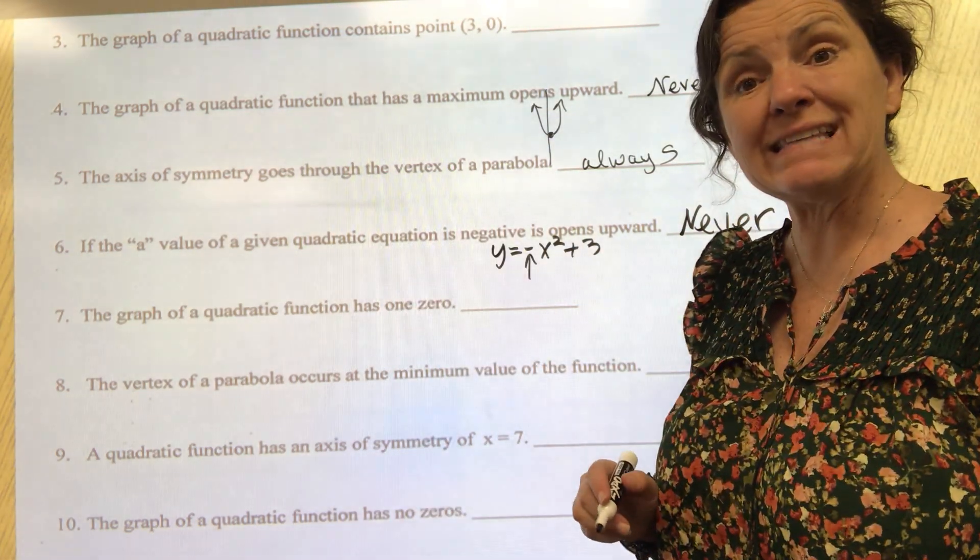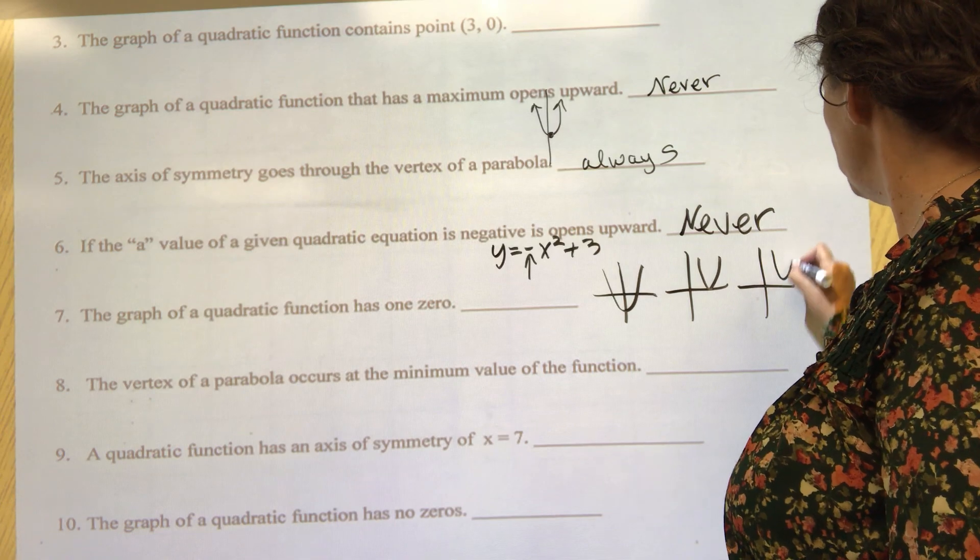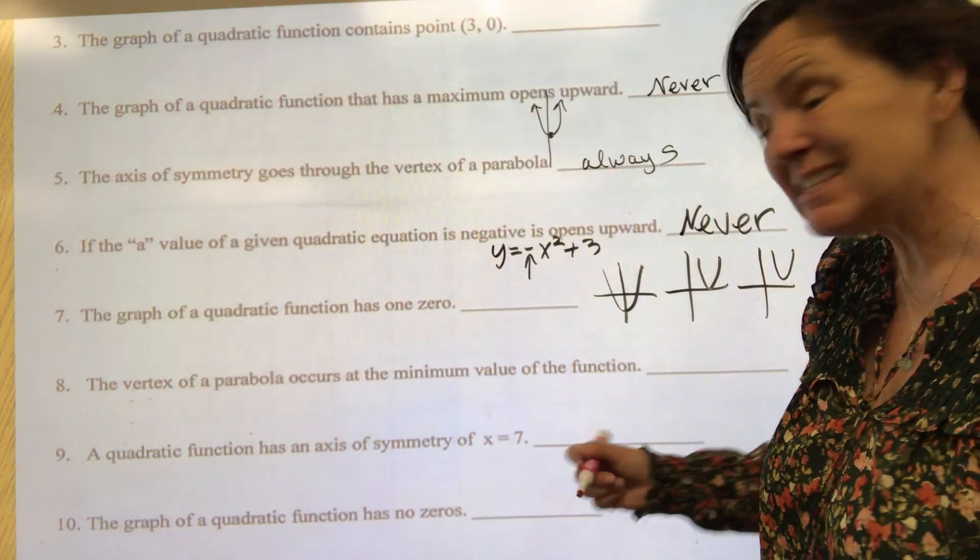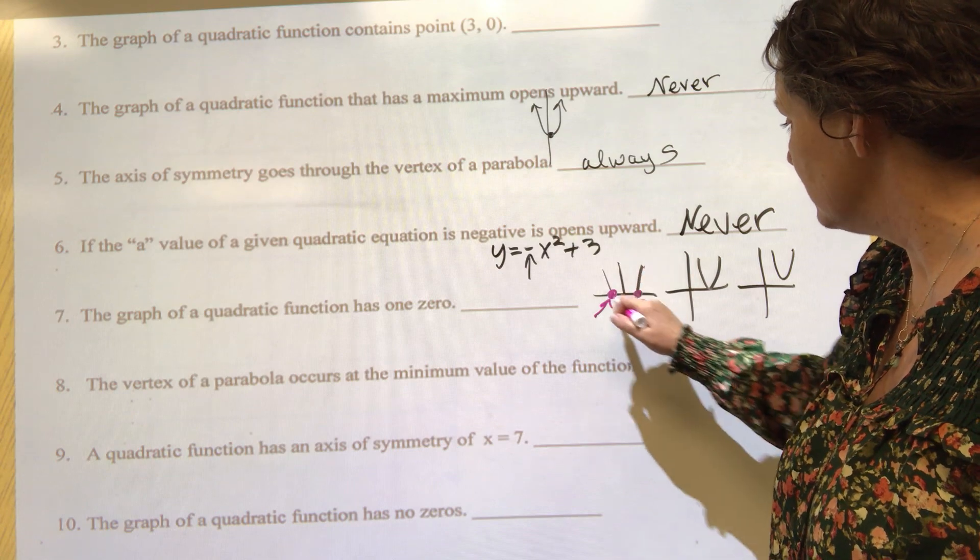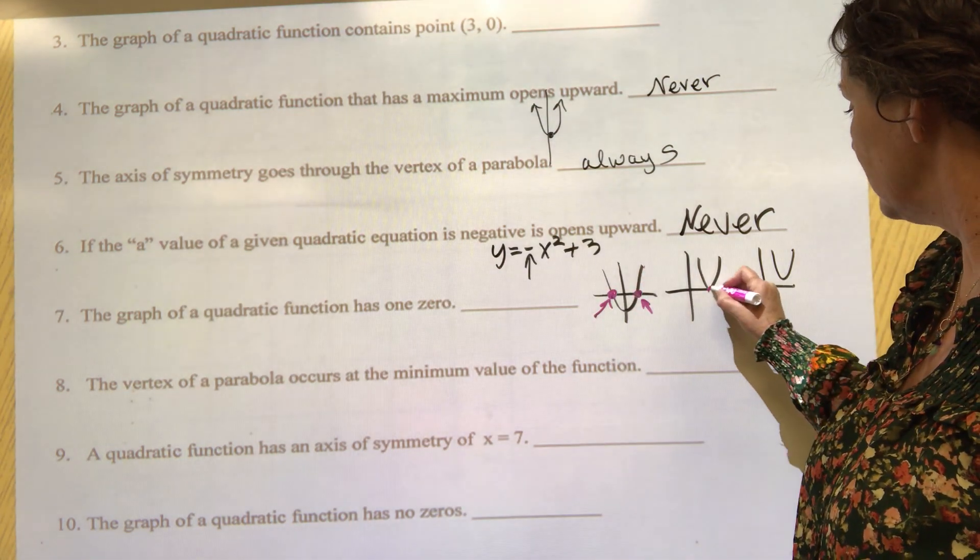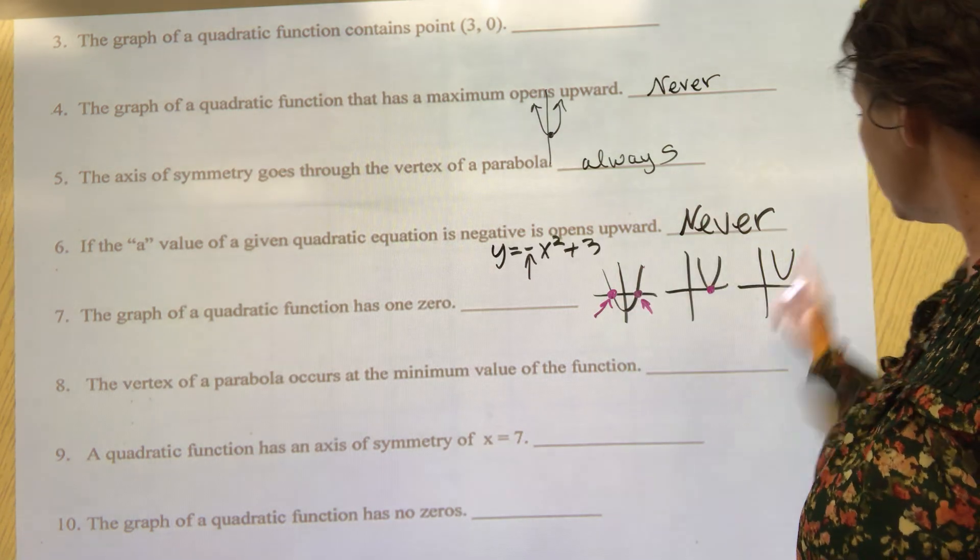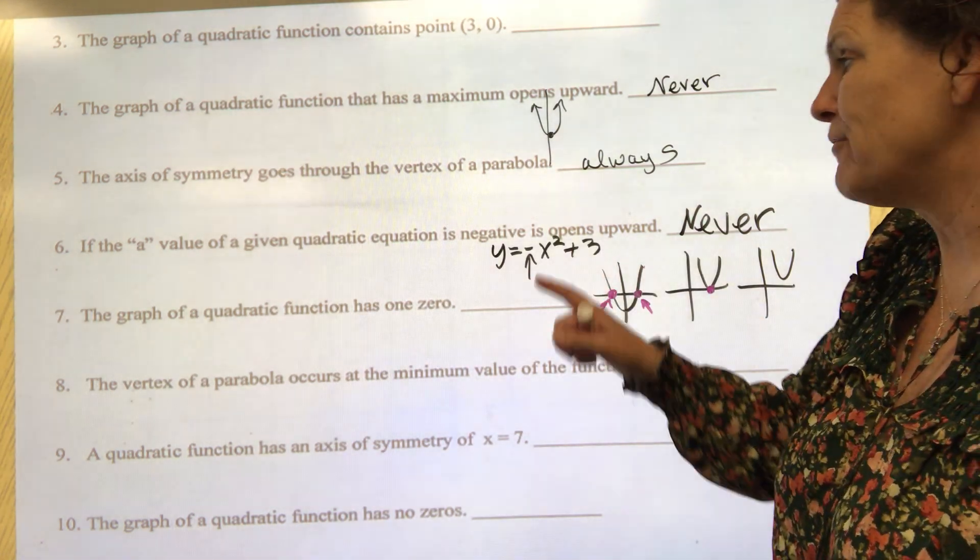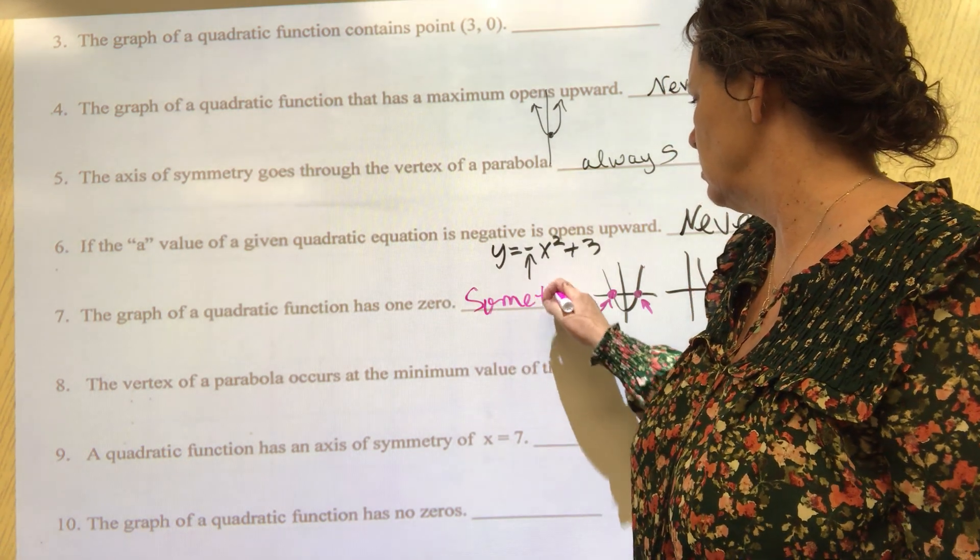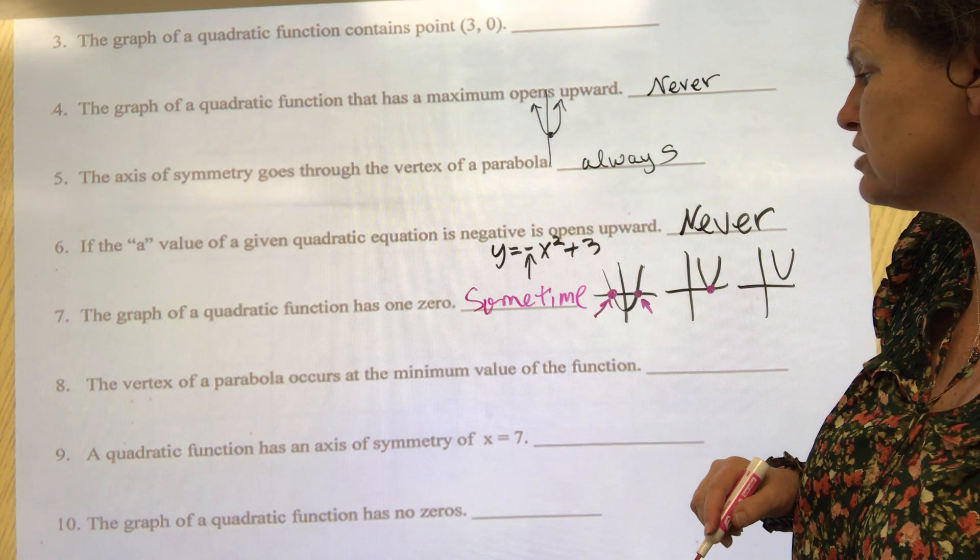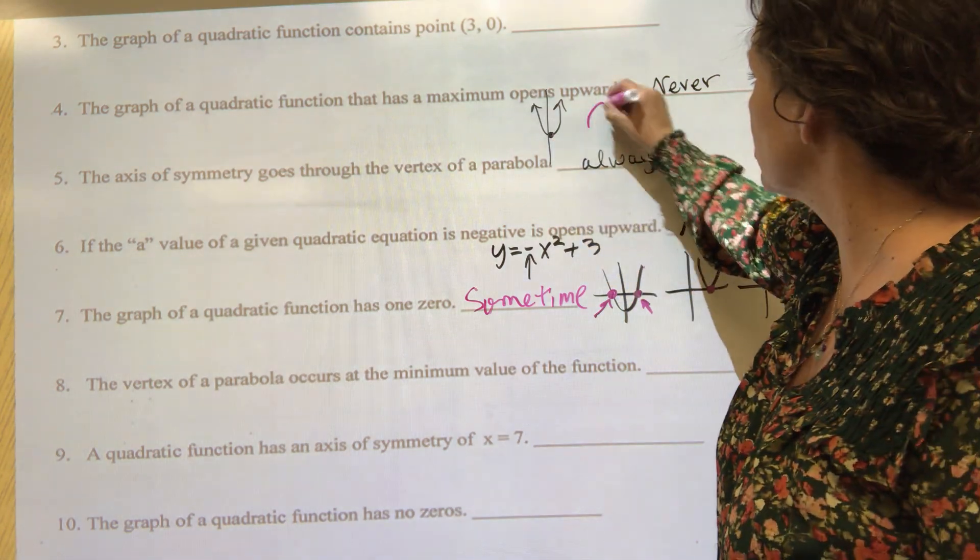The graph of a quadratic function has one zero. What's a zero? A zero is where my parabola touches the x-axis. This one has two zeros because it touches the x-axis two times. Here it touches once, and here it touches none - it doesn't touch at all. So the maximum there could be is two, the minimum there could be zero, and it could have one. So the graph of a quadratic function has one zero - sometimes. The vertex of a parabola occurs at the minimum value of a function. Here it does, sometimes it occurs at the maximum. Right, but we can say sometimes for that - yeah, sometimes.